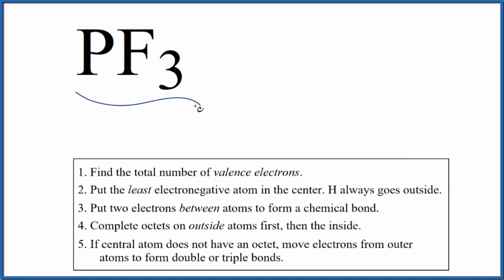Let's draw the PF3 Lewis structure. This is phosphorus trifluoride. So the first thing we do with Lewis structure is we count the total number of valence electrons for the molecule.